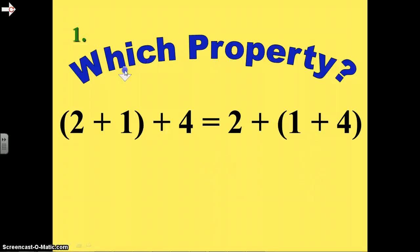This is another property. If you notice the actual terms, the numbers are in the same order. 2, 1, 4, 2, 1, 4. What's changed in this one is the parentheses was around the 2 and the 1, but we moved it to be around the 1 and the 4. If we just reason through this, we know we do parentheses first. 2 plus 1 is 3. 3 plus 4 is 7. On this side, 1 plus 4 is 5. Plus 2 makes 7. It's the same thing. That's because of the associative property.